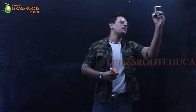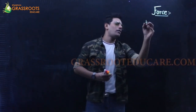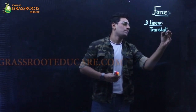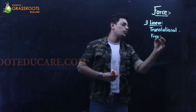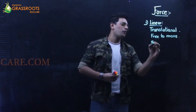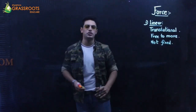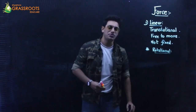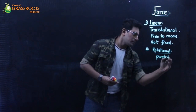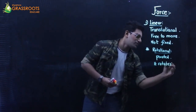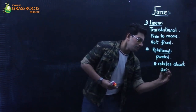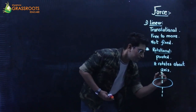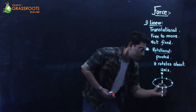So keeping it simple: if I talk about linear motion, we call it translational motion — the body is free to move, not fixed, not pivoted. And if I talk about rotational motion, the body is pivoted and it rotates about the axis, which we call the axis of rotation. The body moves in a circular path about this imaginary axis.